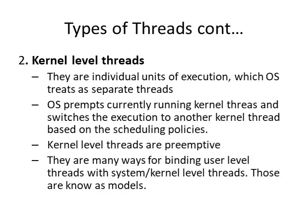The second type of thread is the kernel-level thread. Each individual kernel-level thread unit is created as a separate thread by the OS, and the OS treats each individual unit of execution as a separate thread. The OS scheduler is responsible for preempting the currently running kernel-level thread and switches execution from one thread to another based on the scheduling policy. We can consider kernel-level threads as preemptive, unlike user-level threads which are non-preemptive.